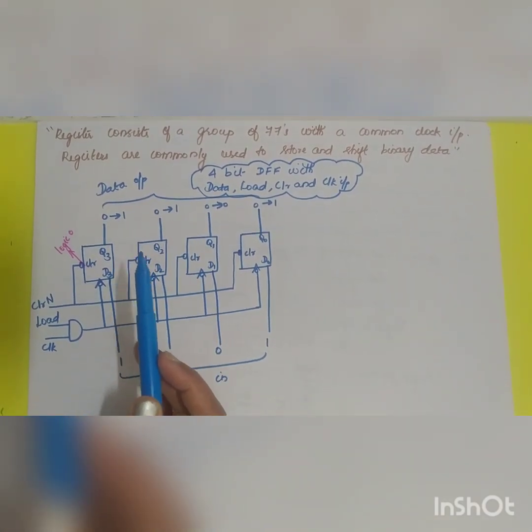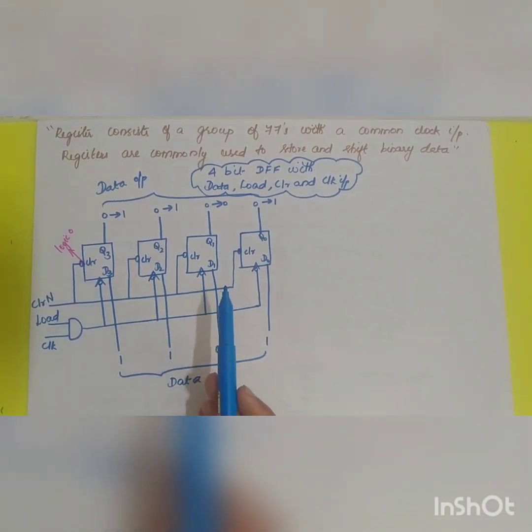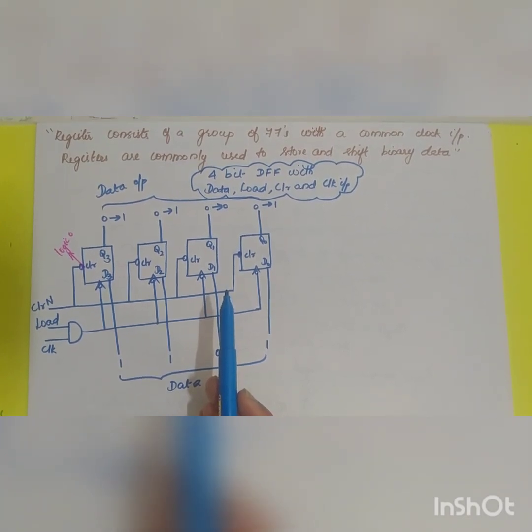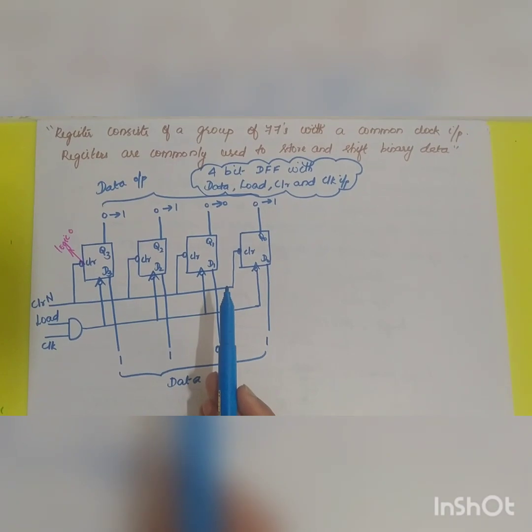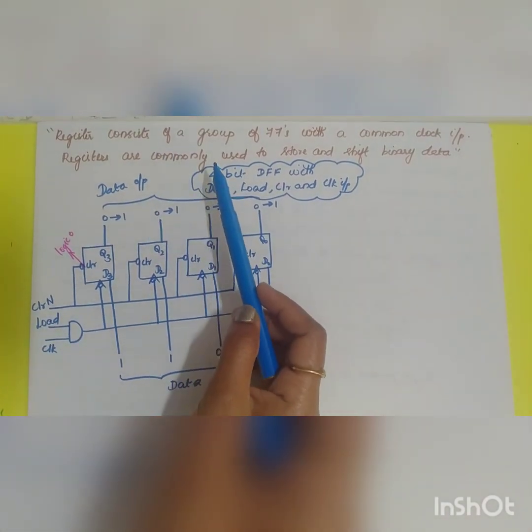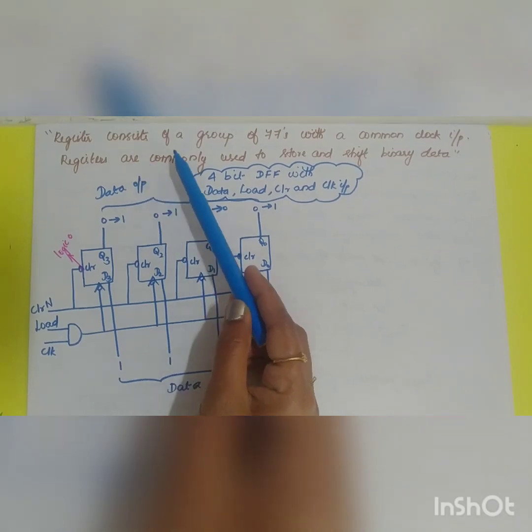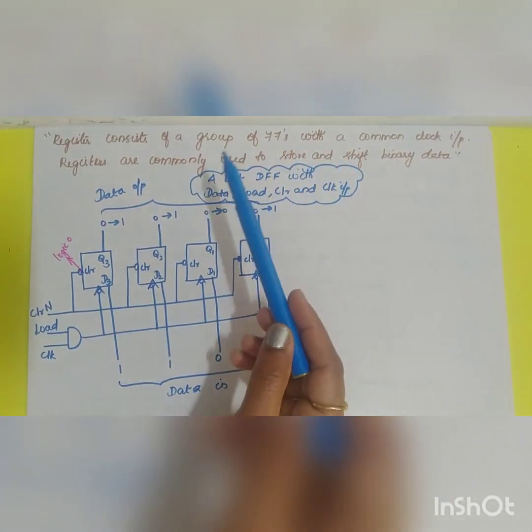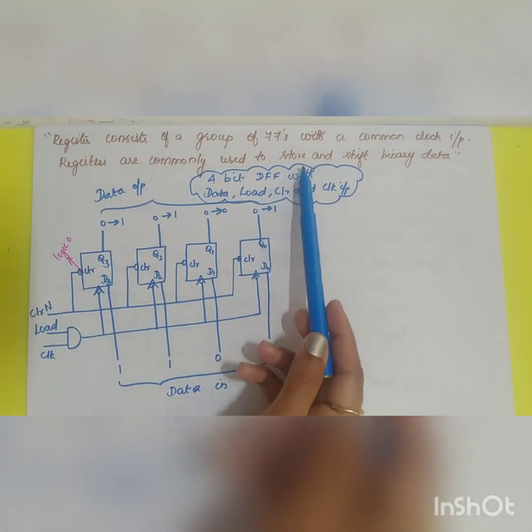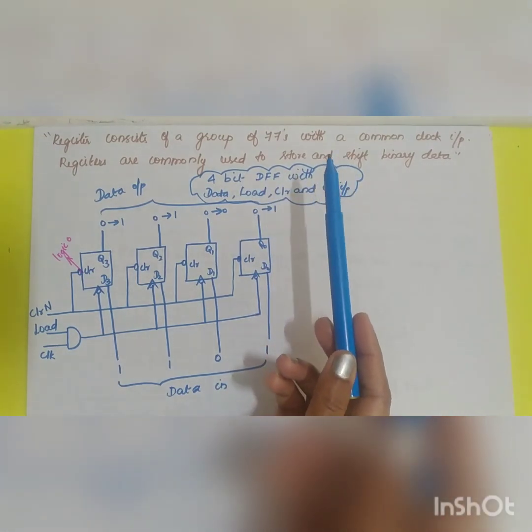So the question is what is a register? Explain how a 4-bit register with data, load, clear and clock input is constructed using D flip-flop. What is meant by a register? Register can be defined as a group of flip-flops with a common clock input. Registers are commonly used to store and shift binary data.